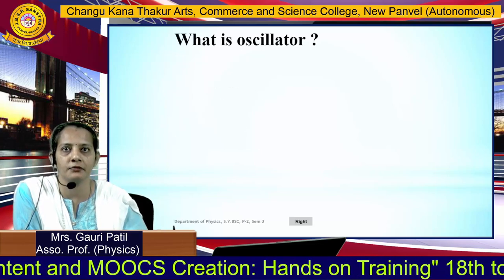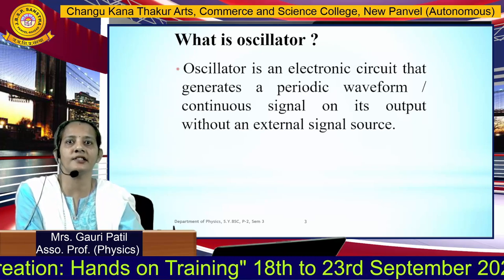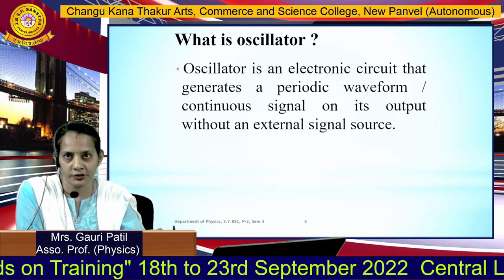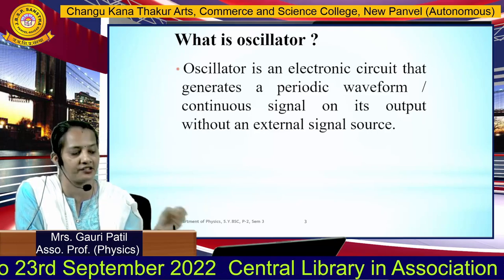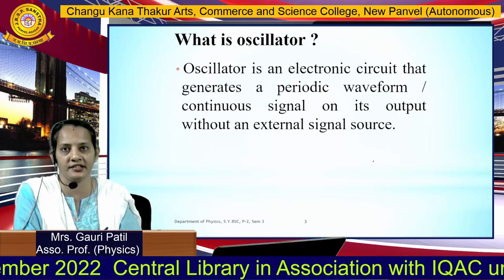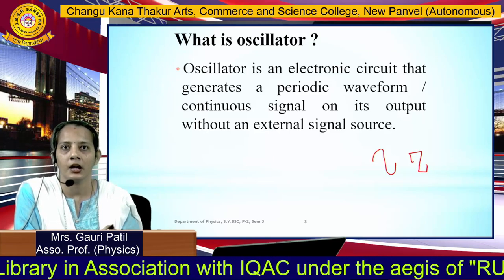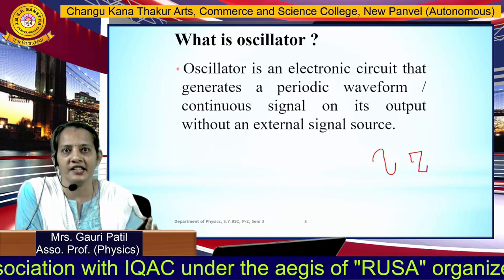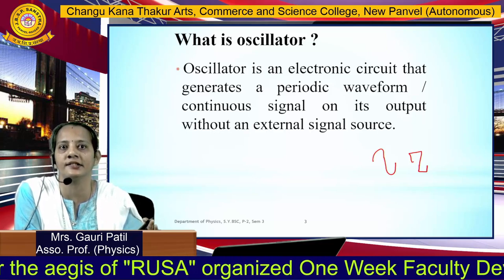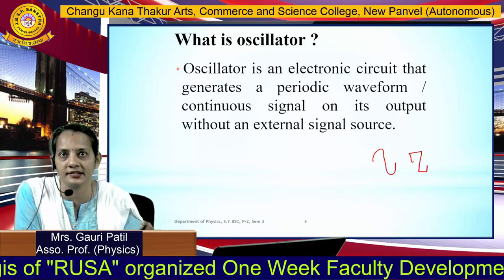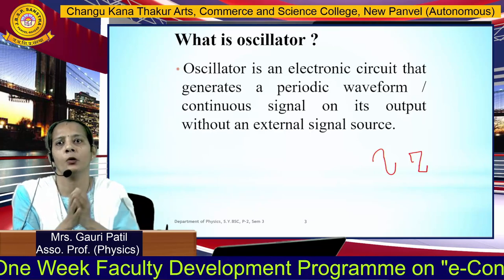An oscillator is an electronic circuit that generates a periodic wave, also called a continuous signal. This continuous signal may be an AC signal such as a sine wave or a square wave. The beauty of this oscillator is that this continuous signal is produced without using any external input source.